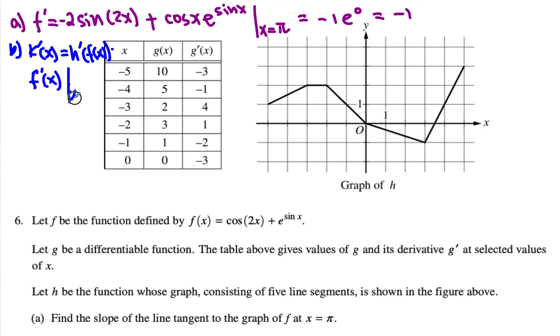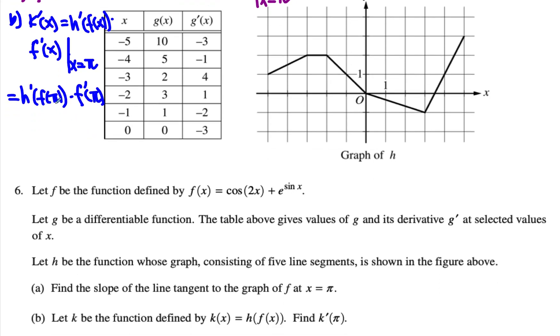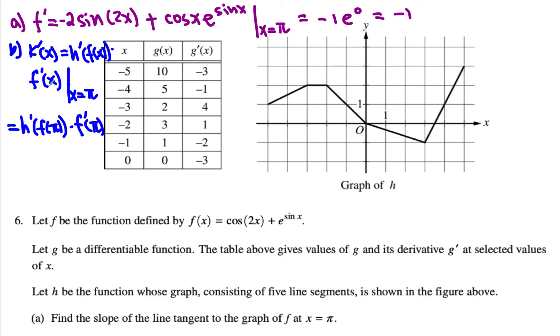But the fact that x equals pi, then what we end up getting is h prime of f of pi times f prime of pi. But we realized f prime of pi was equal to negative one already. And then what is f of pi? We have to figure that out first. If you have to plug in pi in place of x.